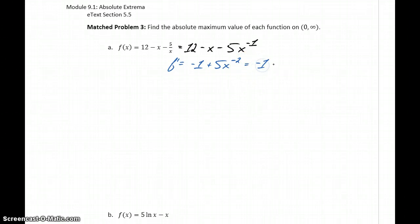This is the same thing as negative 1 plus 5 over x squared. Now we can add these two fractions together to get 5 minus x squared over x squared, and we can set that equal to 0.